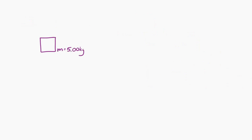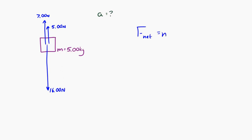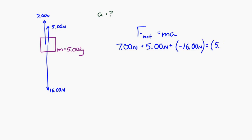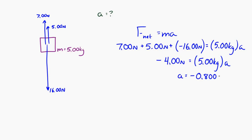Let's look at another example. I have an object with five kilograms of mass, and I apply three different forces: seven Newtons up, five Newtons up, and 16 Newtons down. I want to know the acceleration. Using F net equals MA, with negative defined as downward, my net force is negative four Newtons. The acceleration is therefore negative 0.800 meters per second squared.